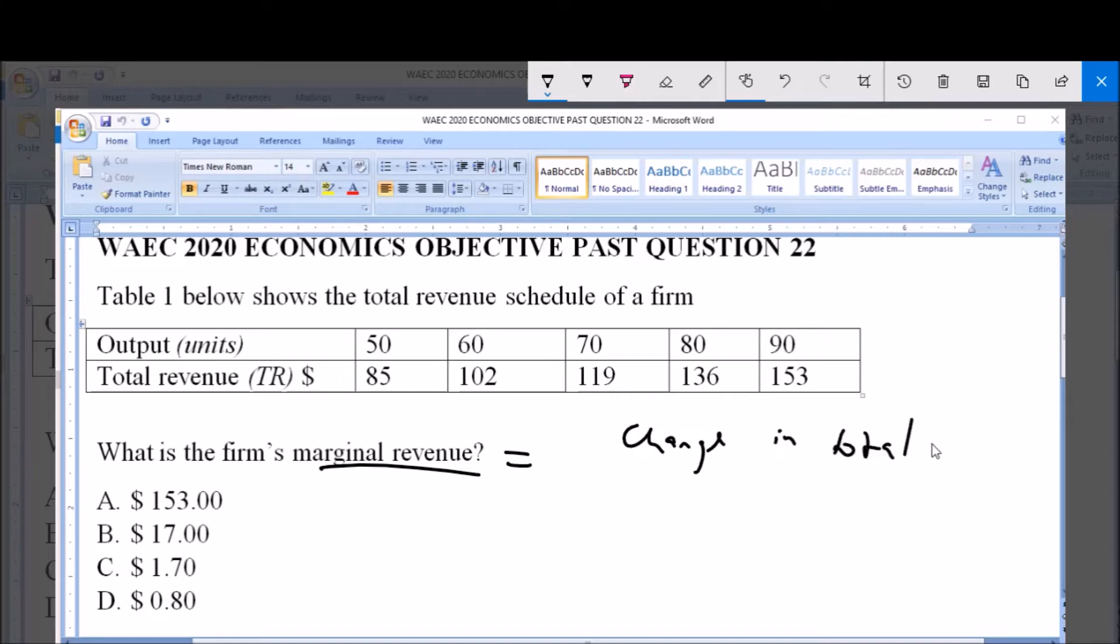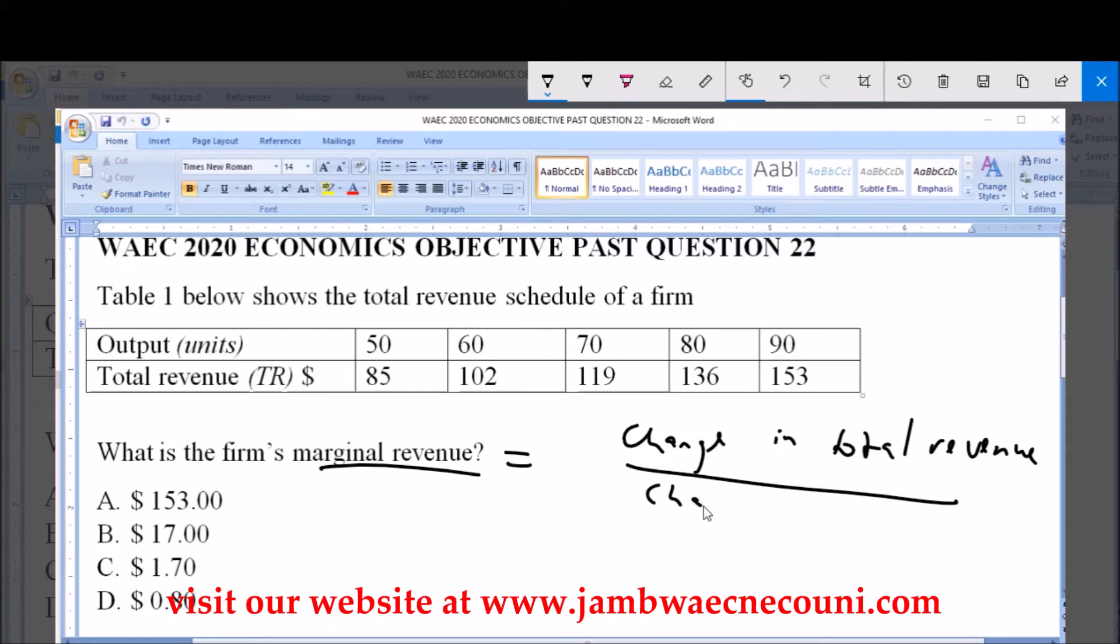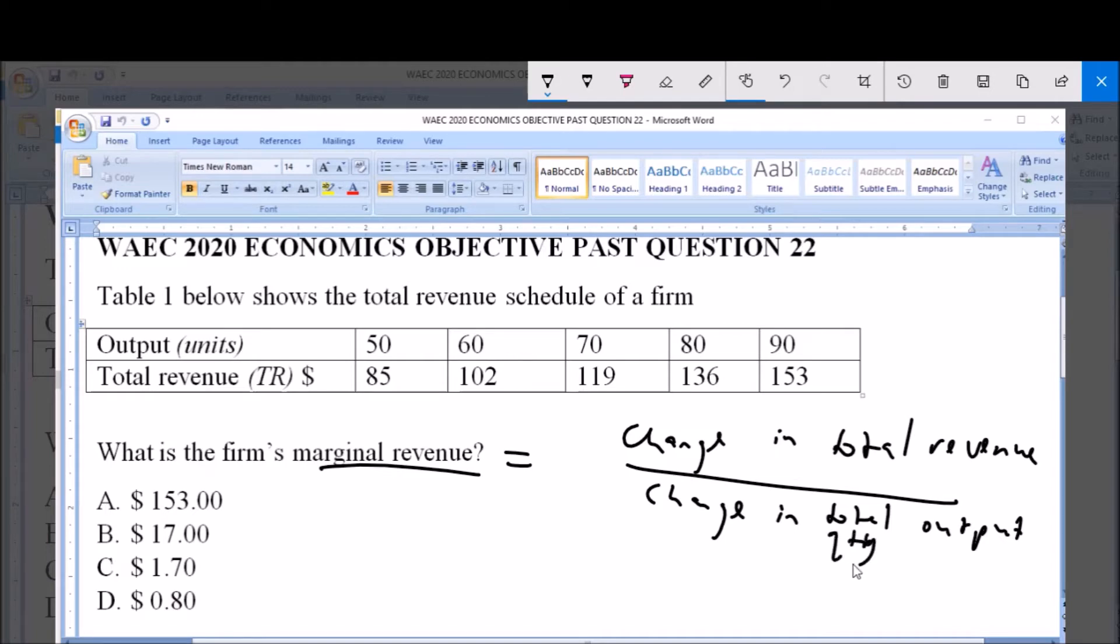So in order to get change in total revenue and change in total output quantity, you can make use of any two successive values from the table.